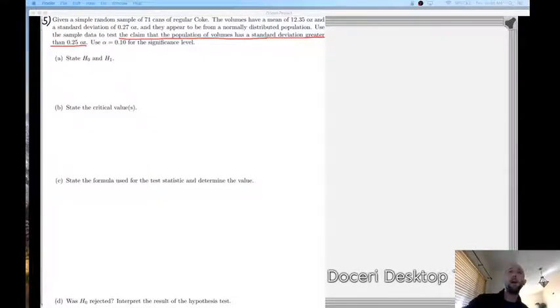The population of volumes has a standard deviation greater than 0.25 ounces. So we can see in there that we have standard deviation. We're looking at the population standard deviation, so sigma is the parameter that we're going to be testing. Our claim here does not include equality, it says greater than. And so our claim is representing the alternate hypothesis in this problem.